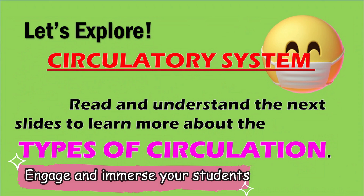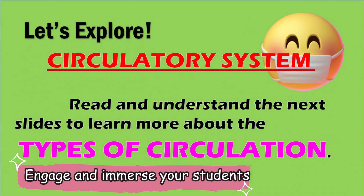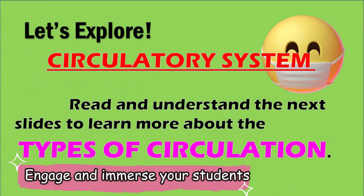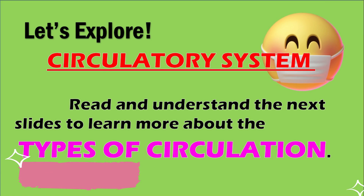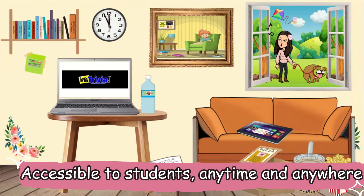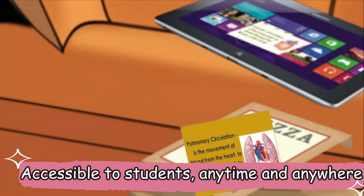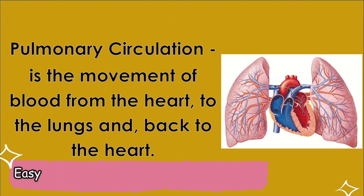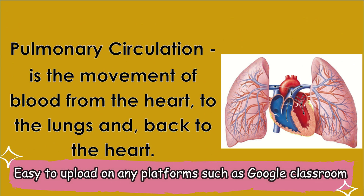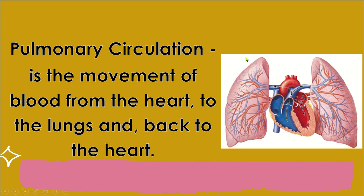Now, let us explore the types of circulation in the circulatory system. The first one: pulmonary circulation. It is the movement of blood from the heart to the lungs and back to the heart. Amazing, right?